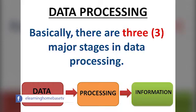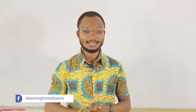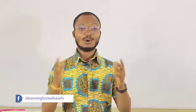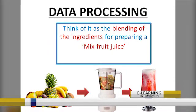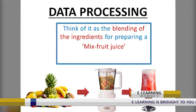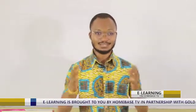You can see on your screen an example of the three stages. In the form of our mixed fruit juice, you can see the picture of a variety of fruits — that stands for the data. The middle one is the blender that has the mixed fruit put inside it, and that stands for the processing. And then the last one, you can see a very nice mixed fruit juice in a glass — that represents the information.